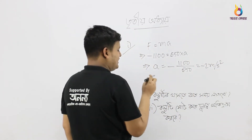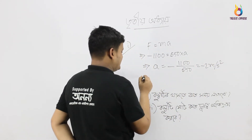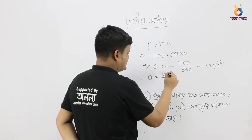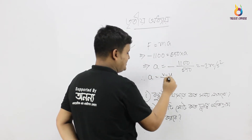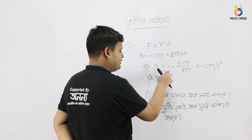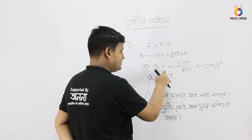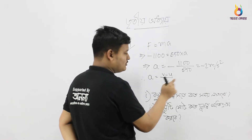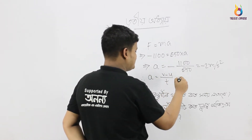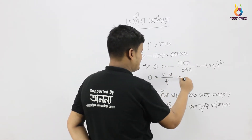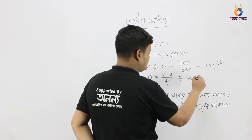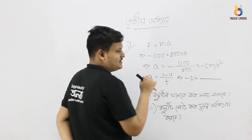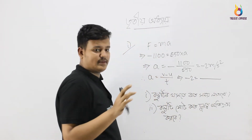Now here, a is equal to v minus u divided by t. From the previous values we found acceleration. Now we will find t from a. So a is equal to v minus u by t, which implies minus 2 is equal to v minus u divided by t.